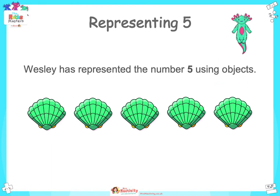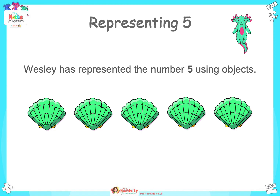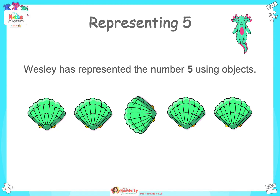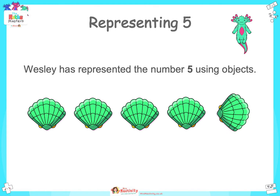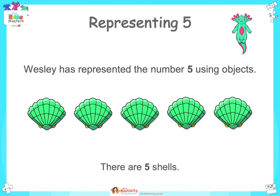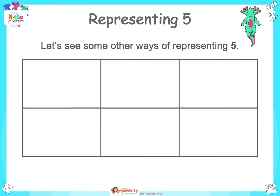Wesley has represented the number five using objects. Let's count the shells as they spin to check there are five: 1, 2, 3, 4, 5. There are five shells. Well done.